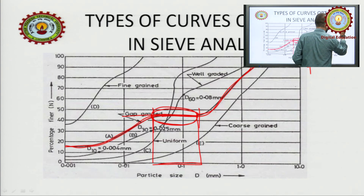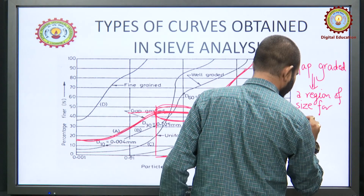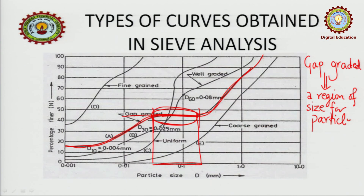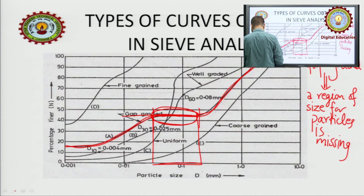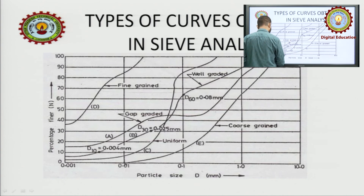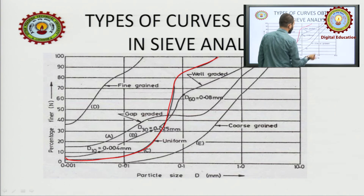Do you understand gap graded? There is a region of particle size that is missing. So this is the gap graded soil. Now let us move to the final one, which is uniform soil. This is your uniform soil.